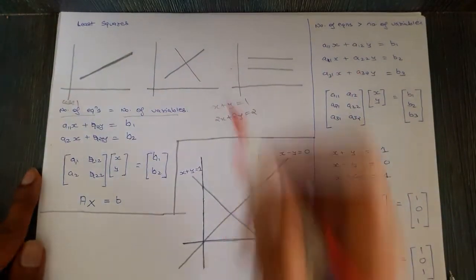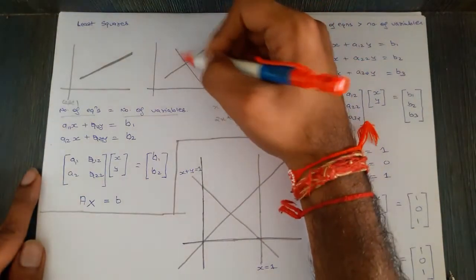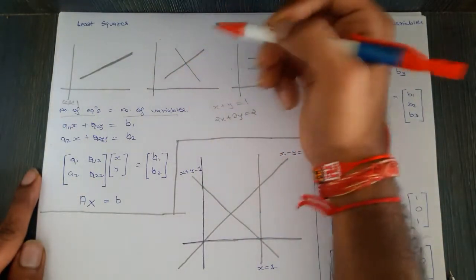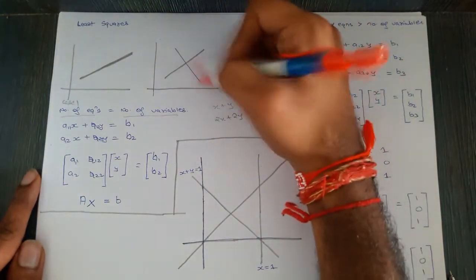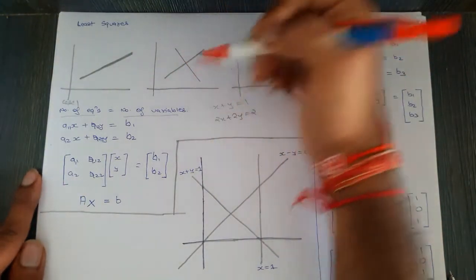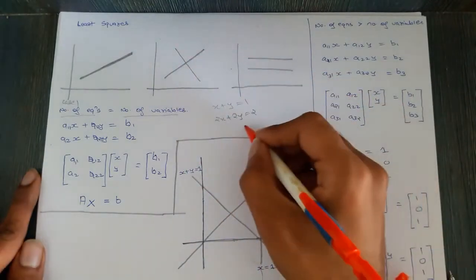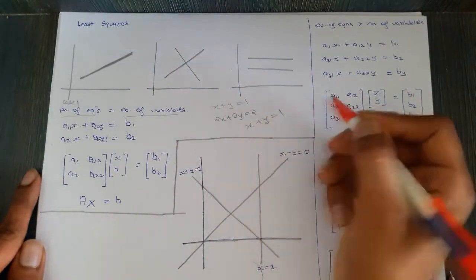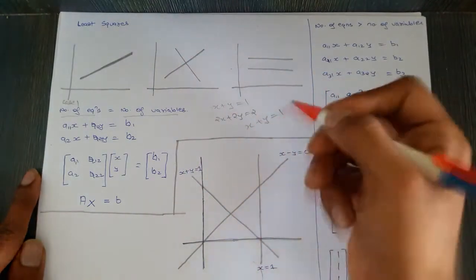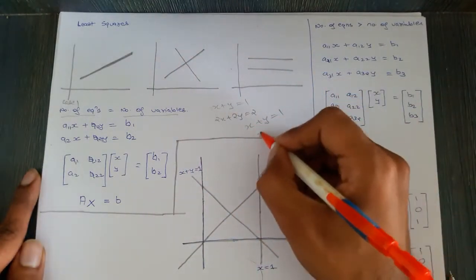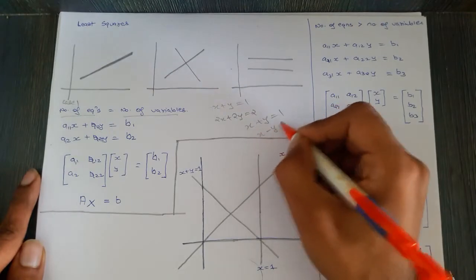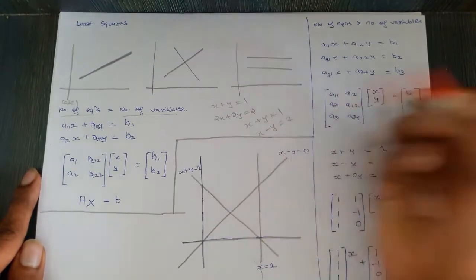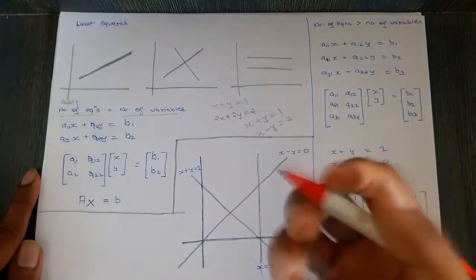The second case is where you have a perfect intersection point — for example, x + y = 1 and x − y = 3. This gives one particular unique solution.